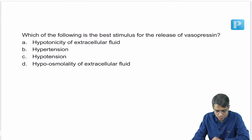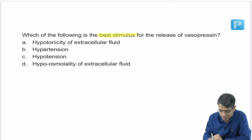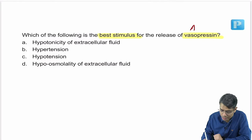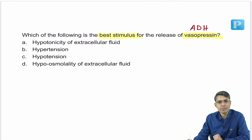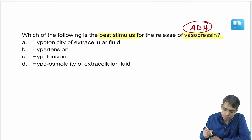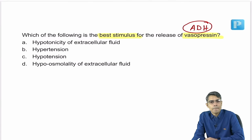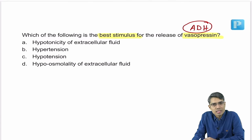Next question: which of the following is the best stimulus for release of vasopressin? Vasopressin is ADH — anti-diuretic hormone. ADH is released from the supraoptic and paraventricular nuclei of the hypothalamus, although it is secreted from the posterior pituitary. The supraoptic nucleus should come first.